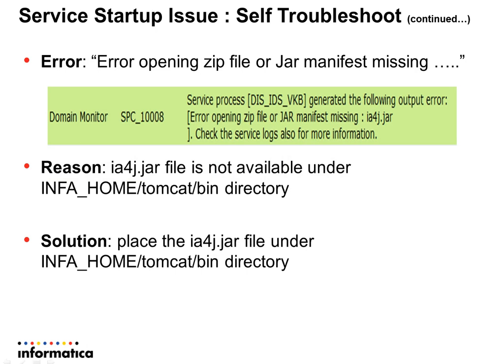The next kind of error is 'error opening zip file or jar manifest file' followed by IA4J.jar. This implies the IA4J jar file is not available under Tomcat bin. The solution is to make sure the jar file is placed under Tomcat bin.